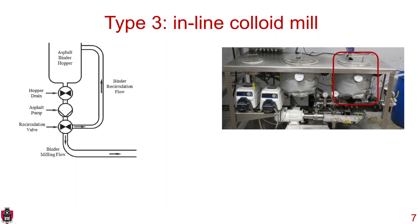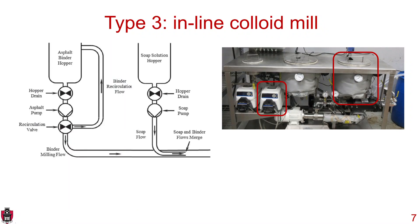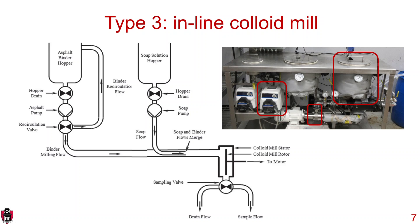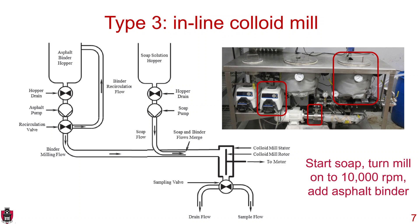The third type is an inline colloid mill. You have an asphalt binder hopper with a line that can recirculate, which helps maintain a constant asphalt binder temperature. You also have a soap solution hopper — actually just a big Pyrex container — with the soap pump in the lower left-hand corner. You start your soap solution going through the mill, turn the mill on to 10,000 RPM, and then add the asphalt binder. The asphalt binder is already recirculating, so you change the recirculating valve to go to the mill. The asphalt binder and soap solution merge together, go through the colloid mill, and you take your sample.